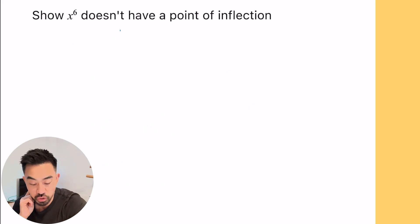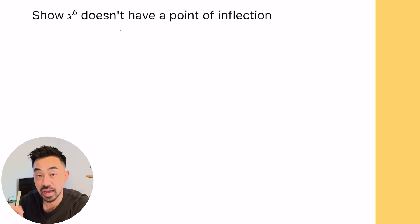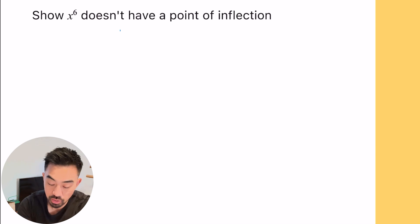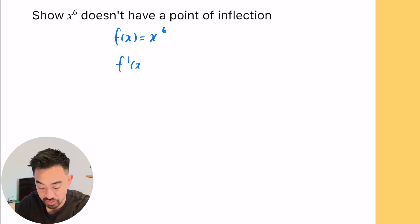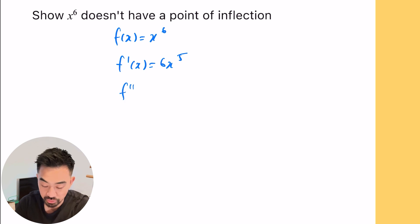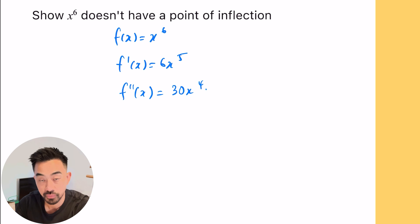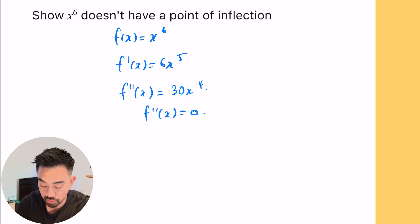Question six says: show that x to the power of six doesn't have a point of inflection. So f of x equals x to the six. The first derivative f'(x) equals six x to the five, and then f double dash of x equals 30 x to the four. Now we solve the second derivative equal to zero: 30 x to the four equals zero, so x equals zero.